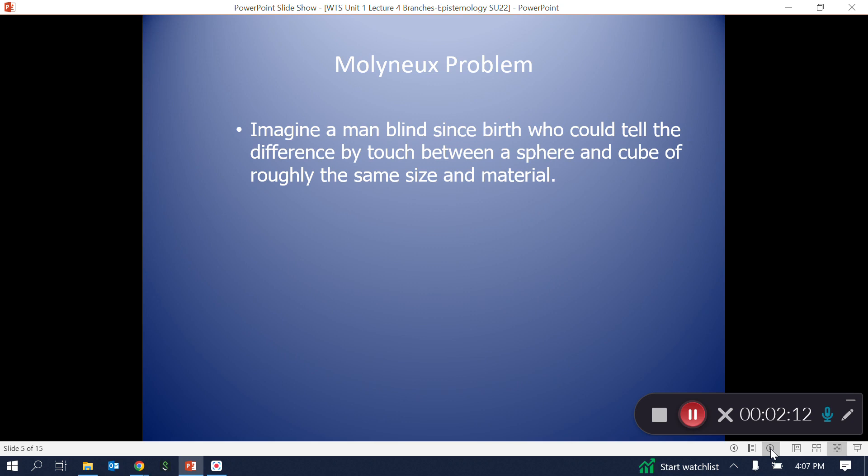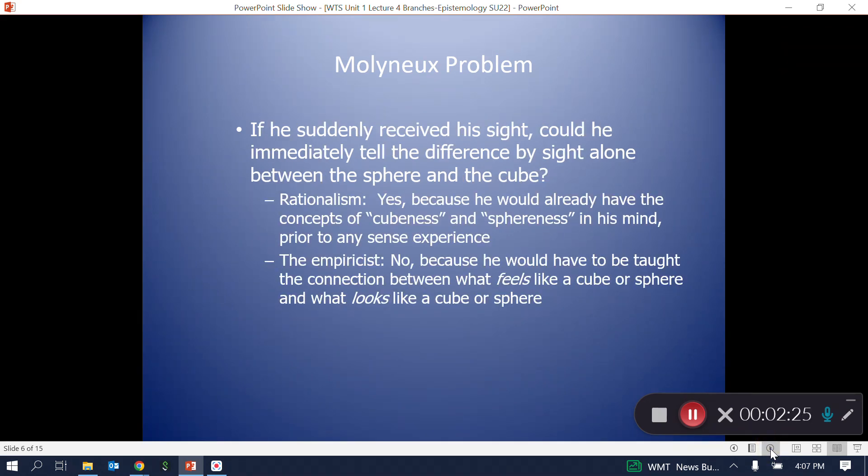Consider the problem posed by Mr. Molyneux some 300 years ago. Molyneux says, imagine a man who's been blind since birth. He can tell the difference by touch between a sphere and a cube of roughly the same size and material. Now, if he suddenly received his sight, could he immediately tell the difference by sight alone, without touching the sphere and cube, which was which? The rationalist would say yes, because the man already had the concepts of cube and sphereness in his mind prior to any sense experience. The empiricist would say no, because he would have to be taught the connection between what feels like a cube or sphere and what looks like a cube or sphere.